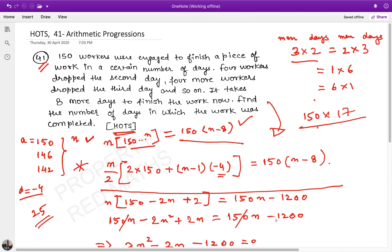Now you can multiply and verify: 150 times 17 will give you the same result if you compare this value with the sum of n terms till 25. If you add 150 plus 146 plus 142 and so on till the 25th term, you will get the exact same answer as 150 into 17.